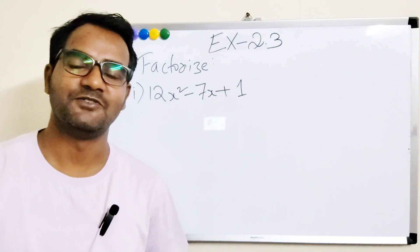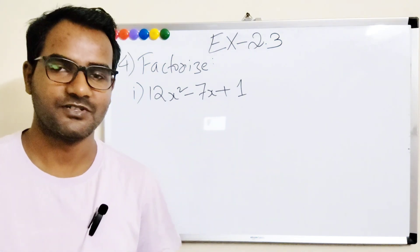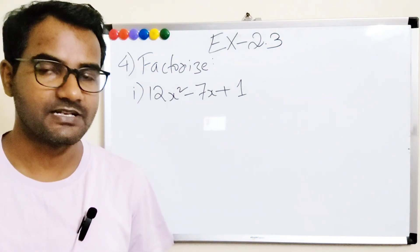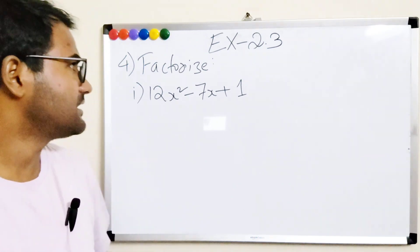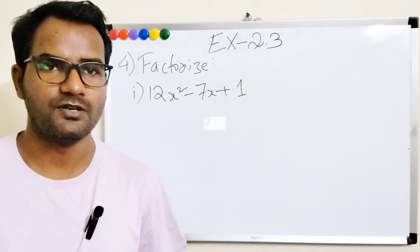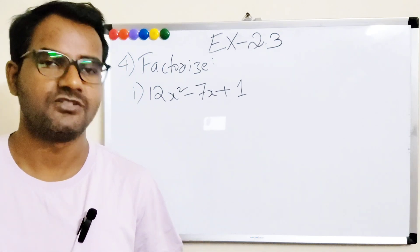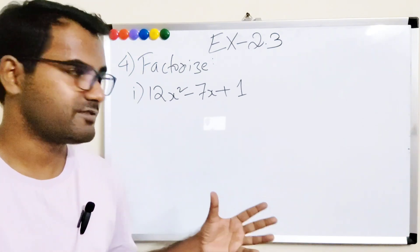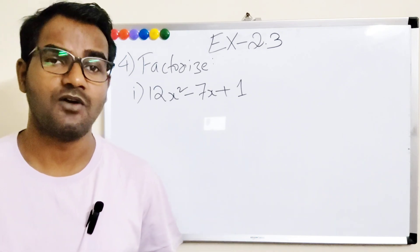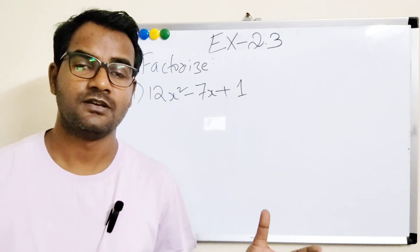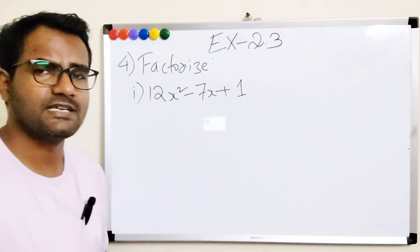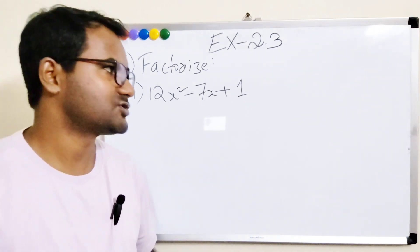Hello everyone, welcome to a short tutorial. Today we have come to Exercise 2.3, Class 9 Maths. We are going to solve question number 4, which is about factorization — we have to factorize the given polynomials. This is very easy if you understand, so try to understand as I explain.